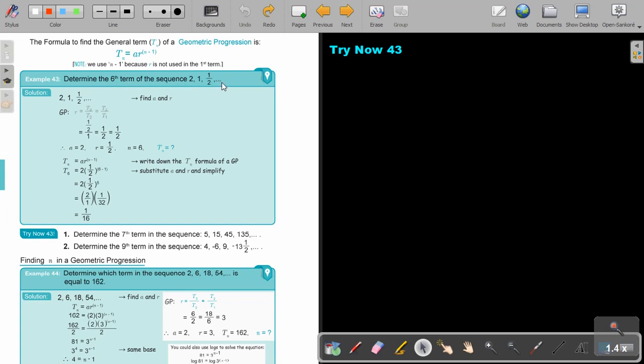Determine the sixth term of the sequence. Now the value of r, how do we get it from previous videos? The front term divided by the back. So it's going to be t3 divide t2, t2 divide t1, which will be a half. So the value of a is 2, r is a half, n is 6, and we're finding tn. I write down the formula, do my substitution, and a half to the power of 5 is 1 over 32 times 2, which simplifies to 1 over 16.